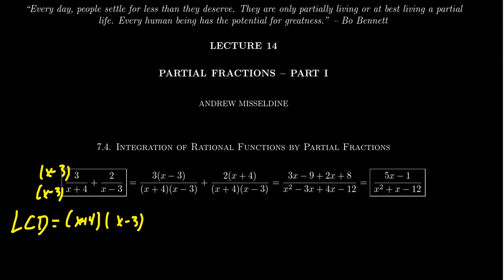If we multiply out the denominator (x+4)(x-3) using FOIL, we get x² - 3x + 4x - 12. Combining like terms gives x² + x - 12. So the sum of these two fractions equals (5x-1)/(x²+x-12).